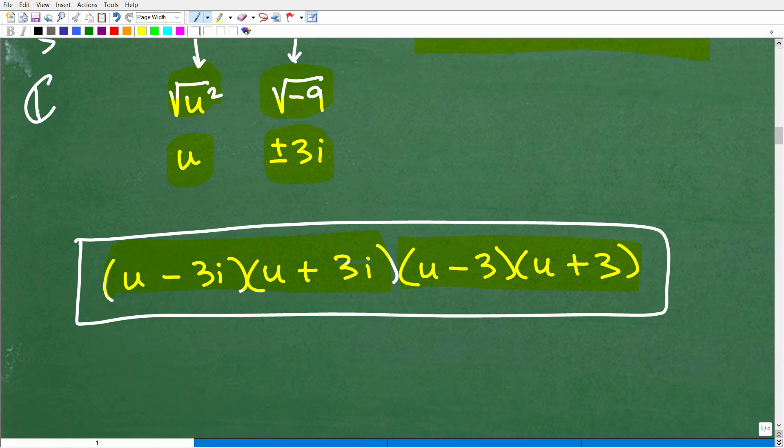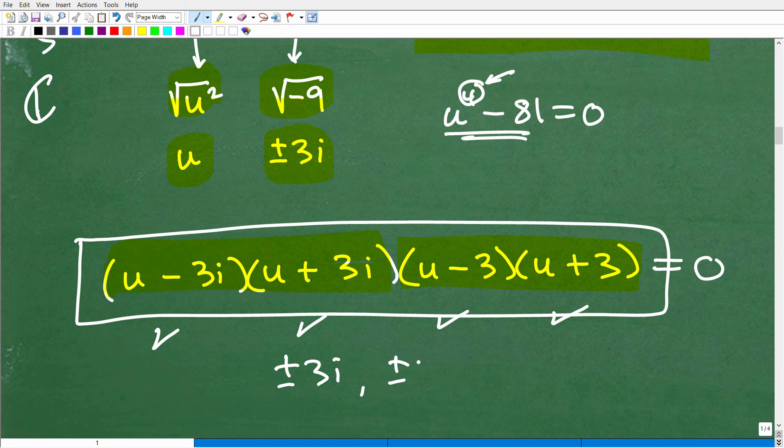Now, what's the benefit of this? Well, remember, our original problem was U to the fourth minus 81. And we factor that. But if I set this equal to zero and I said solve this polynomial equation, well, this polynomial equation would have four solutions. Now, this is something we call the fundamental theorem of algebra. And I was able to factor this down. Now, I could set each one of these factors equal to zero and solve for U. And I would have all of my solutions right here. And, of course, we can see that's going to be positive and negative 3i and positive and negative 3. All together, I have four solutions.